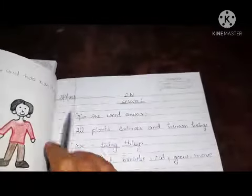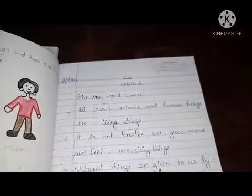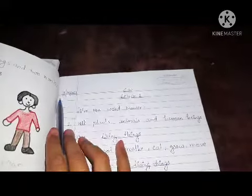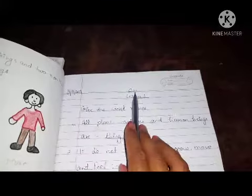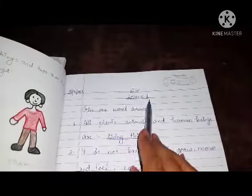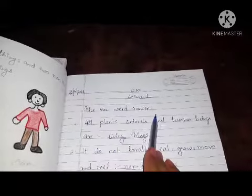So this one is give one word answer. You have to do this work in your science copy. Let's see what you have to do. First of all, write date like this: 3-4-2021, then write classwork. Then write Lesson 1, in the next line, give one word answer.